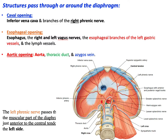The three openings are at T8, T10, and T12 — the caval opening, esophageal opening, and aortic opening. For the caval opening at T8, the structures that pass through are the inferior vena cava and a branch of the right phrenic nerve. The right phrenic nerve passes to the inferior surface of the diaphragm through the caval opening, while the left phrenic nerve takes a different route.